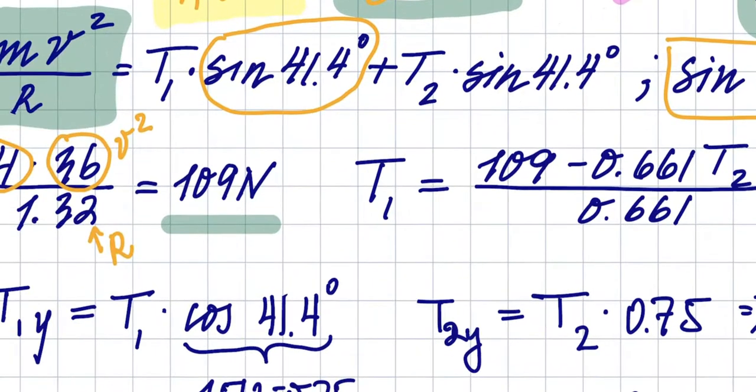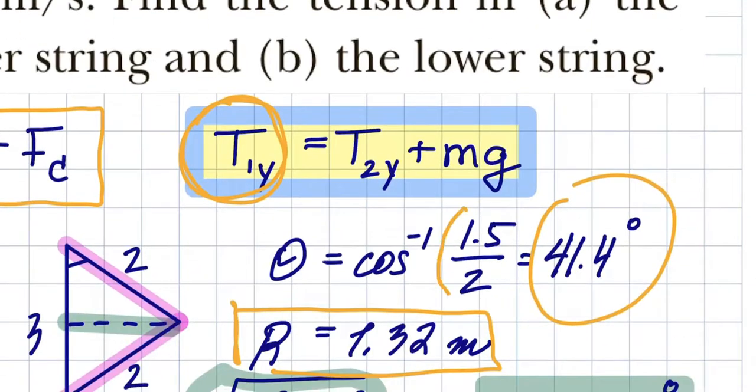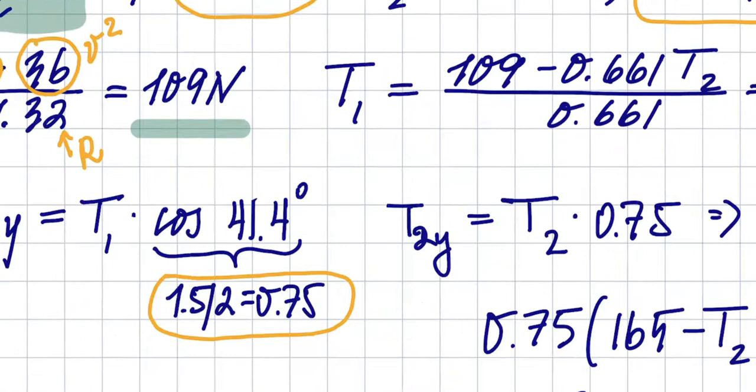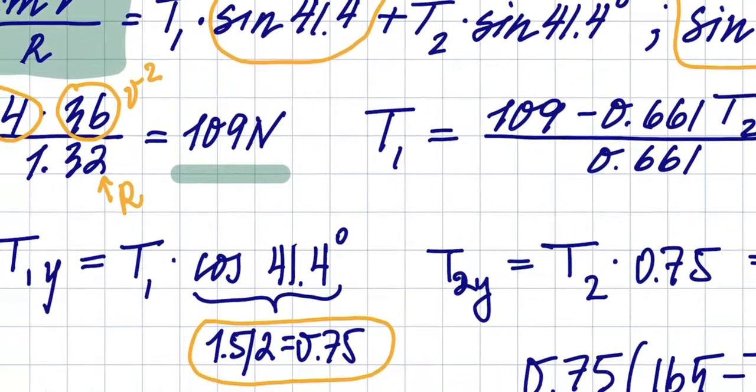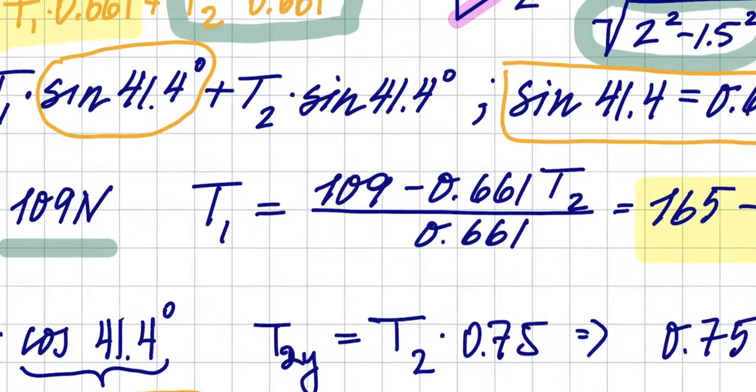So what I do after that—cosine, remember how we found the angle? Cosine of that 41.4 is 1.5 over 2, so it's 0.75 ultimately. So now T2y is also multiplied by cosine of 41.4, so ultimately also multiplied by 0.75.